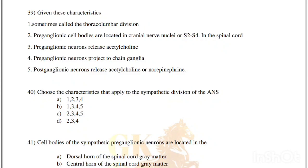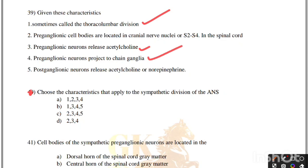Given these characteristics, choose those that apply to the sympathetic division of the ANS: sometimes called the thoracolumbar division; pre-ganglionic cell bodies located in cranial nerve nuclei; preganglionic neurons release acetylcholine; preganglionic neurons project to chain ganglia; postganglionic neurons release acetylcholine or norepinephrine. Correct answer is option B — 1, 3, 4, 5.